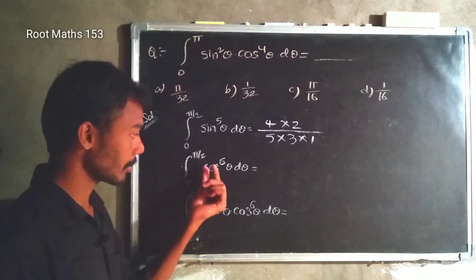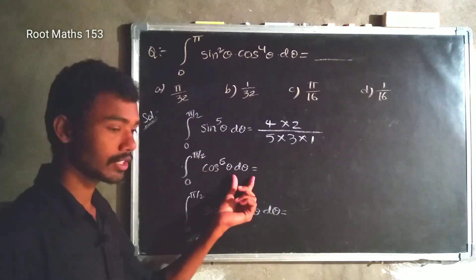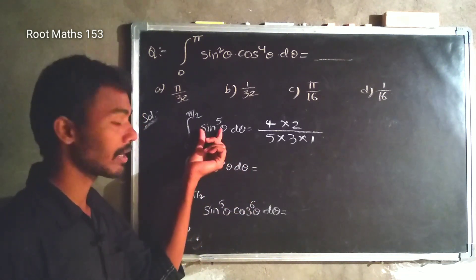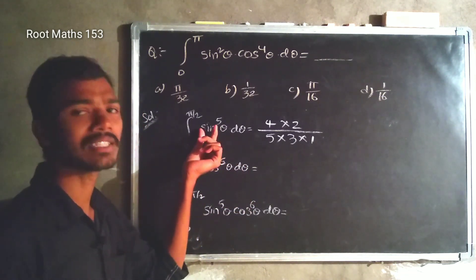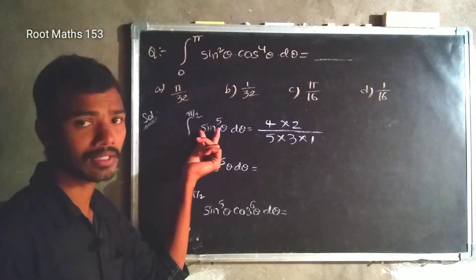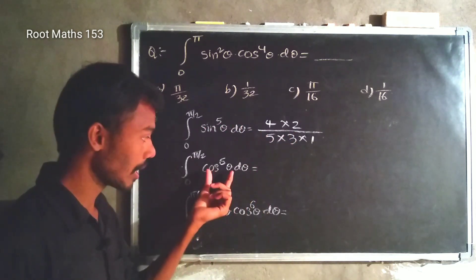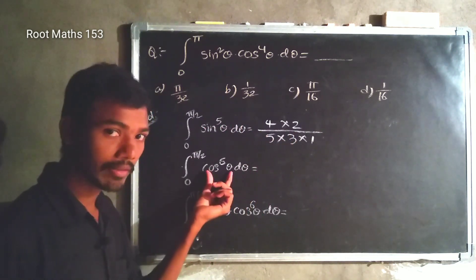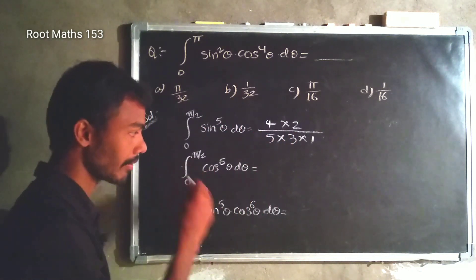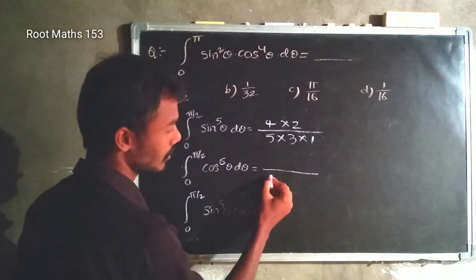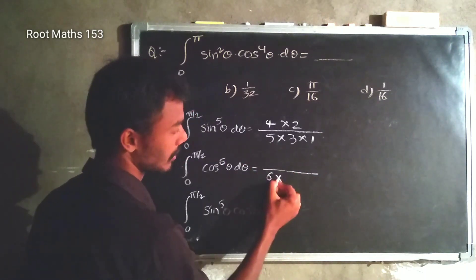Integration 0 to pi, cos power 6 theta, d theta. Here, the power is 6. That's for sin and cos. The power is even, so we apply the Wallis formula.